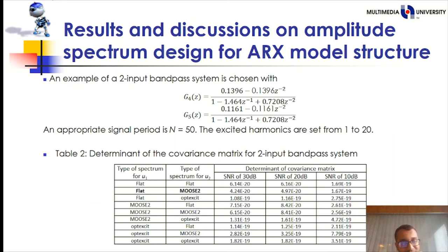System G4 and system G5 is the example of a two-input bandpass system. An appropriate signal length is also N equals to 50. The excited harmonics are set from 1 to 20. The determinant of covariance matrix is computed for various combinations of the signal U1 and U2. The results are summarized in table 2. We can see from this table, the combination of flat and MOOSE2 signal provide the lower value of the determinant of covariance matrix.